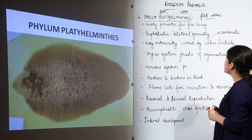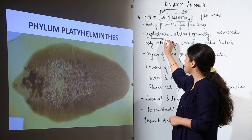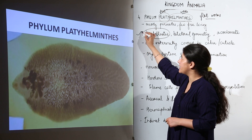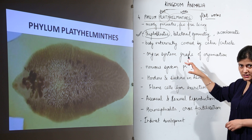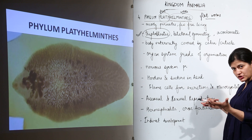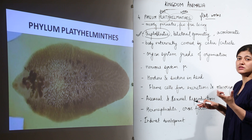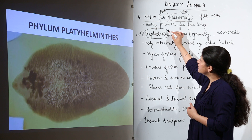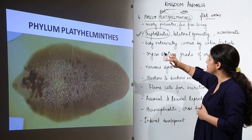Coming to their characteristics, first we find a clear-cut mesoderm. The organism is triploblastic. Until the ctenophores we saw that a triploblastic condition was present, but that mesoderm was not actually the true mesoderm we talk about. Here we have clear-cut three germ layers — that is why the organism is triploblastic.